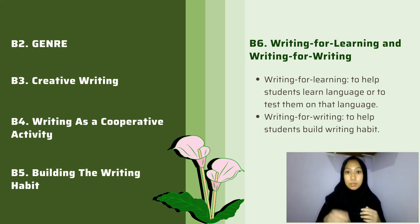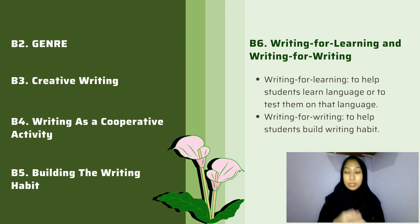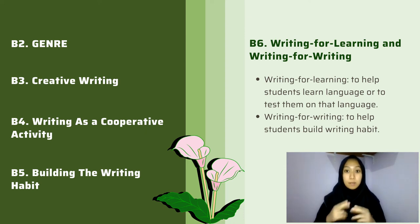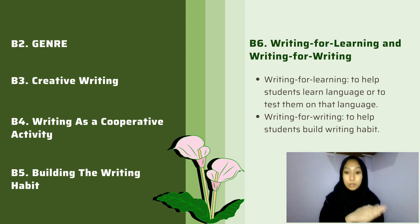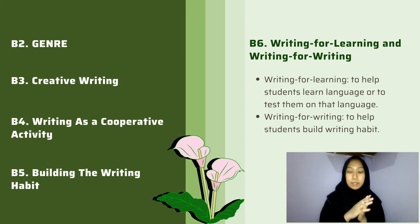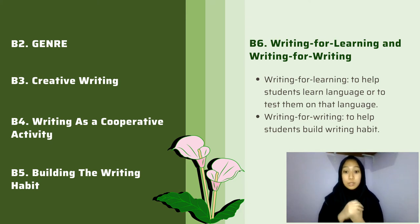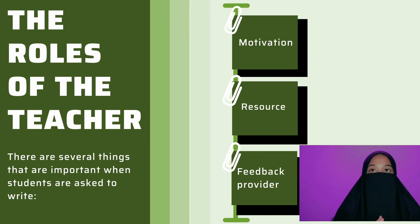The next approach is writing for learning versus writing for writing. Writing for learning is to help students learn a language or to test them on the language. For example, when the teacher asks them to write sentences in the past tense, the aim is not to train the student to write but to help them remember to use past tense structures. Writing for writing helps students build the writing habit — for example, when the teacher asks them to design a good magazine advertisement, this will help the student improve their ability and may become good at writing advertisements with practice.